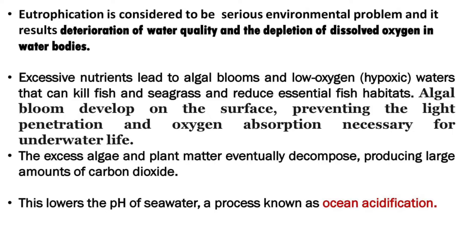Eutrophication is considered to be a serious environmental problem and it results in deterioration of water quality and the depletion of dissolved oxygen in water bodies. Excessive nutrients lead to algal blooms and low oxygen waters that can kill fish and seagrass and reduce essential fish habitats. Algal blooms develop on the surface, preventing the light penetration and oxygen absorption necessary for underwater life.